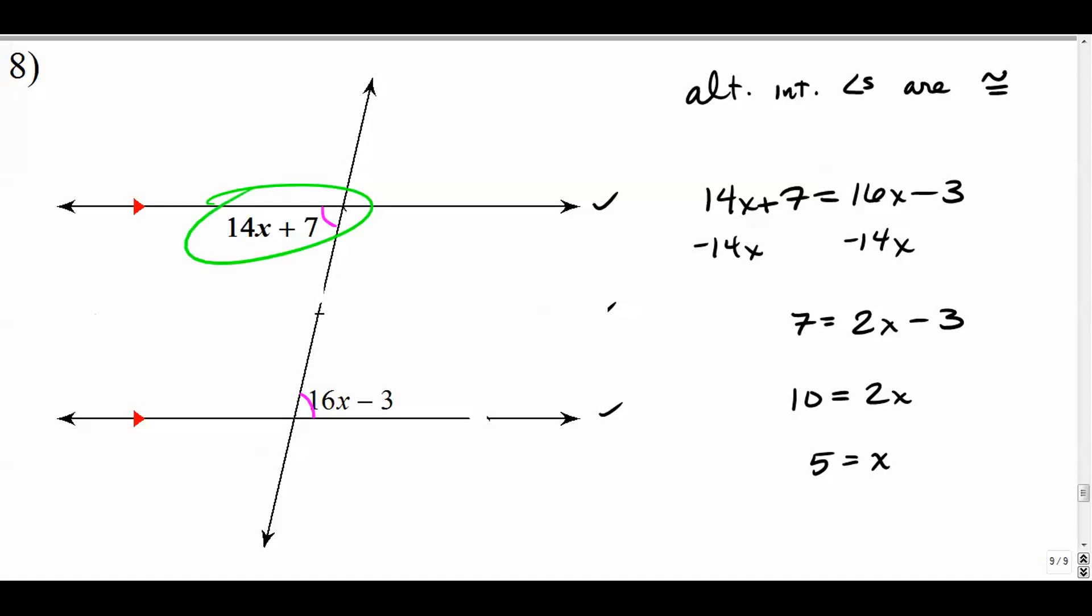The problem is actually asking you to find the measure of the bold angle, which is the top one here in bold. Just take your x value, plug it back in there. 14 times 5. That's 70 plus 7 is 77 degrees. And that's your final answer. So there you go.